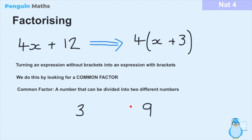What about 3 and 9? Well, 3 divided by 3 equals 1 and 9 divided by 3 gives us 3, so we can say that 3 and 9 have a common factor of 3. And finally, let's think about 10 and 25. The number 5 works here because 10 divided by 5 gives us 2 and 25 divided by 5 gives us 5. So 10 and 25 have a common factor of 5.